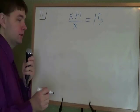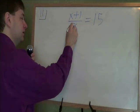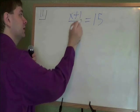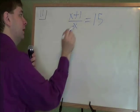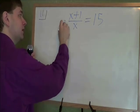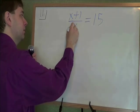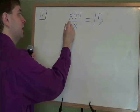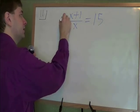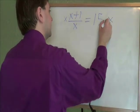On this problem we've got a fraction, but don't worry. Fractions are actually pretty easy to deal with when they're in equations like this. When you've got a fraction in an equation, all you have to do is multiply both sides of the equation by whatever the bottom of the fraction is. If we've got over x, we're going to multiply both sides by a plain old x.